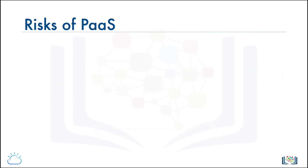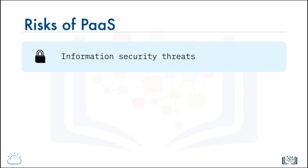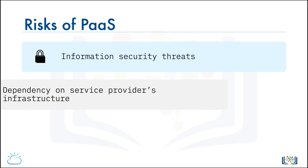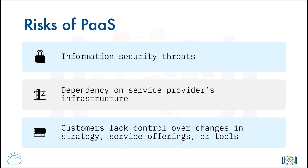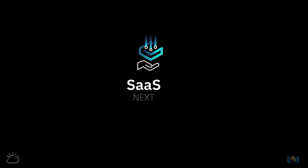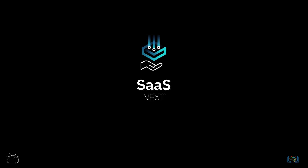PaaS clouds do come with some risks — risks that all cloud offerings have in general, such as information security threats and dependency on the service provider's infrastructure. Services can get impacted when a provider's infrastructure experiences downtime. Customers also don't have direct control over changes that may take place when a provider makes changes in its strategy, service offerings, or tools. But the benefits can far outweigh these risks. PaaS continues to experience strong growth and is predicted to become the prevailing platform delivery model moving forward. In the next video, we will look at the Software as a Service model, its features, benefits, and some use cases.